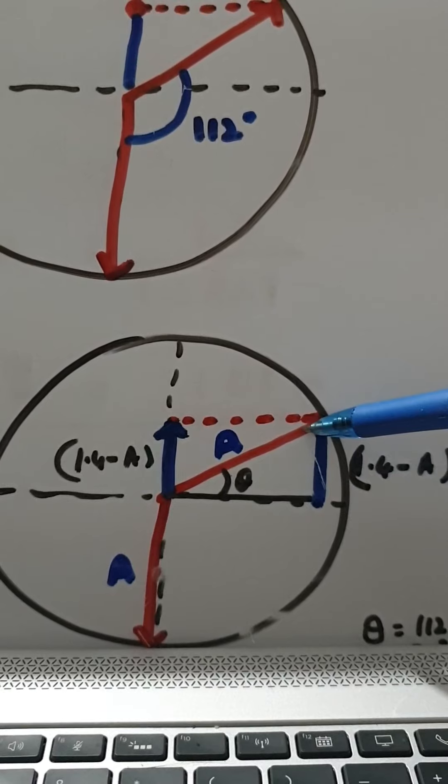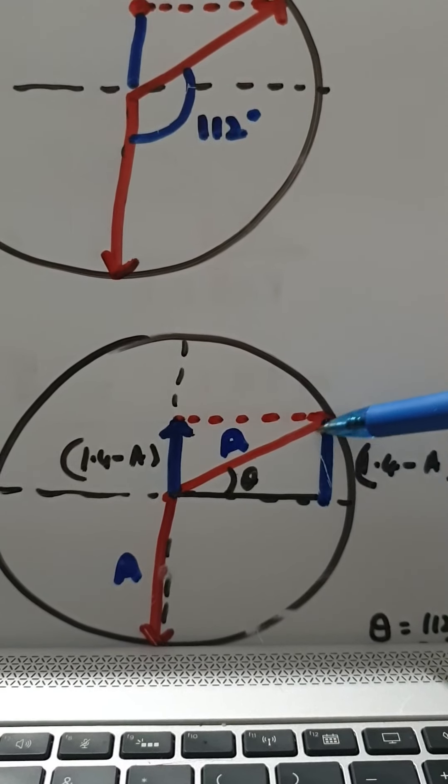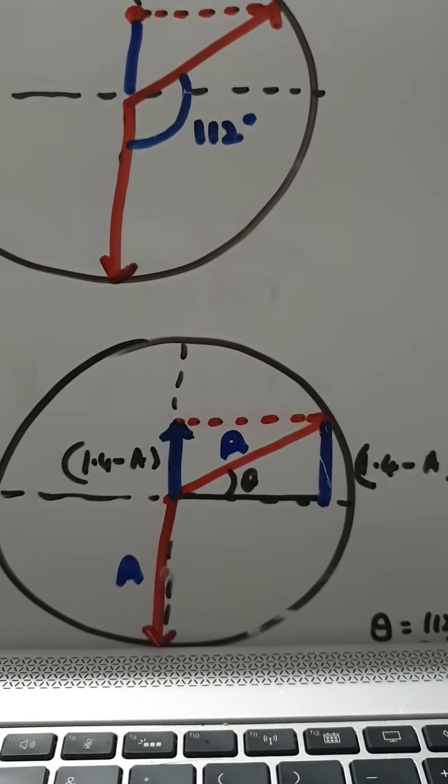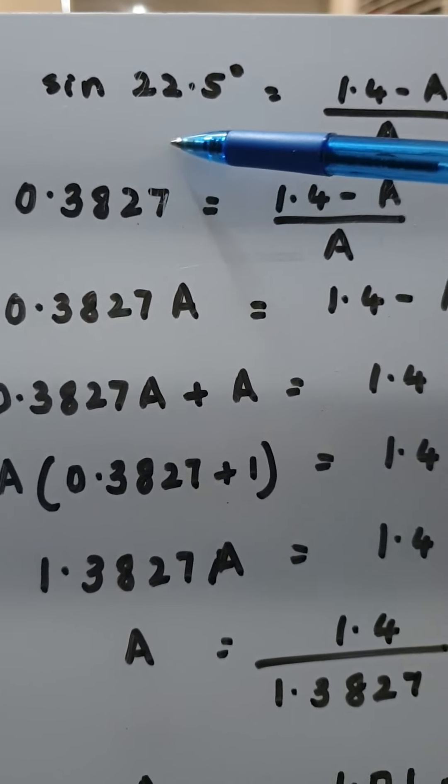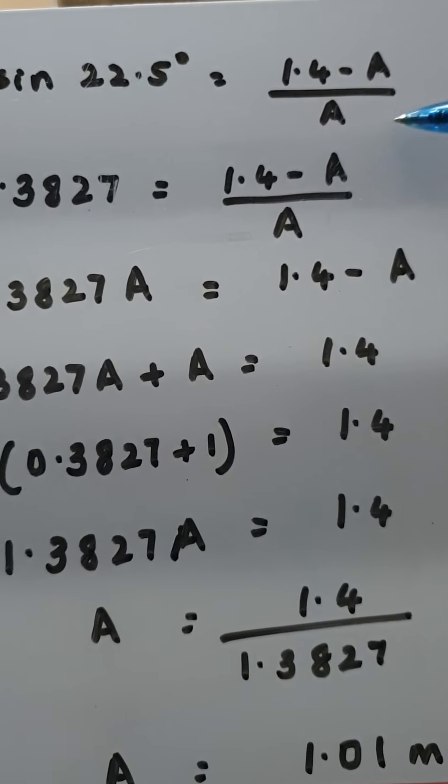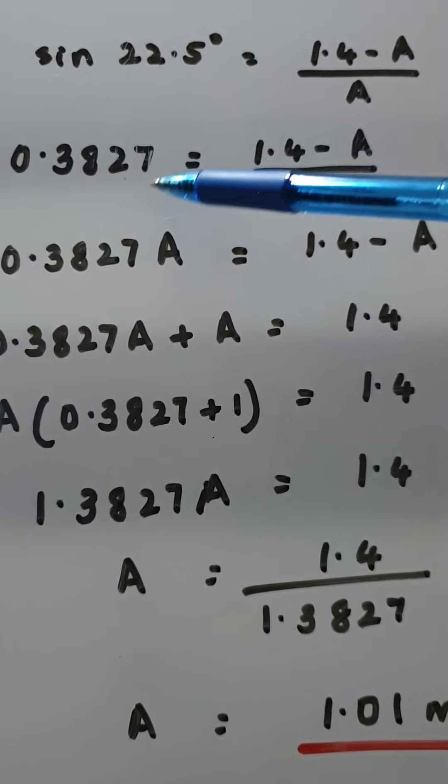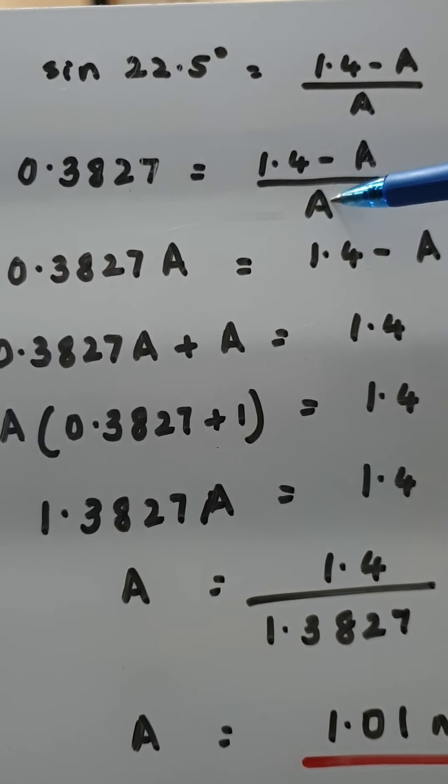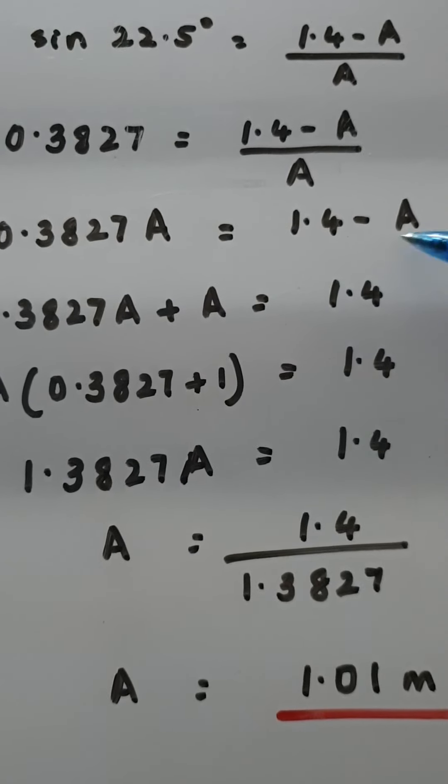So looking at this right angle triangle we get sine theta is the opposite divided by hypotenuse. The opposite is 1.4 minus A and the hypotenuse is capital A. So you get sine 22.5 degrees is 1.4 minus A over A. That's your opposite over hypotenuse and if I put sine 22.5 into my calculator I get 0.3827 is equal to this number and then I'm just going to multiply both sides by A so I get 0.3827A equals 1.4 minus A.